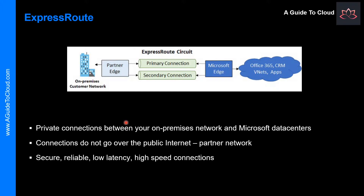You can use ExpressRoute to both connect and add compute and storage capacity to your existing data centers with high throughput and fast latencies. Azure will feel like a natural extension to or between your data centers, so you can enjoy the scale and economics of public cloud without having to compromise on network performance. With predictable, reliable, and high throughput connections offered by ExpressRoute, you can build applications that span on-premises infrastructure and Azure without compromising privacy and performance.